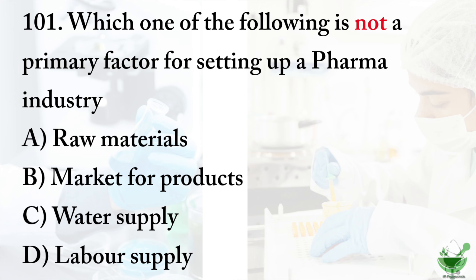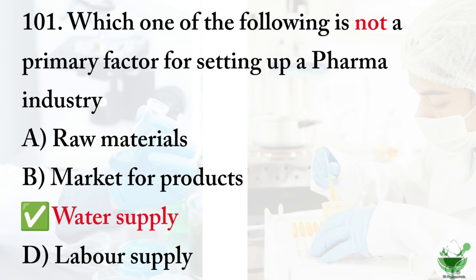Question number 101: Which one of the following is not a primary factor for setting up a pharma industry? Option A: raw materials. Option B: market for products. Option C: water supply. Option D: labor supply. The correct option is option C, water supply.